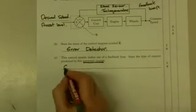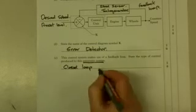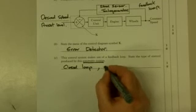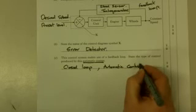So it's actually closed to the outside world. So it's a closed loop system, which produces automatic control. And that is the easiest four marks in the exam.